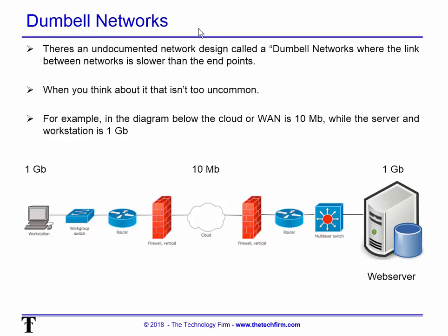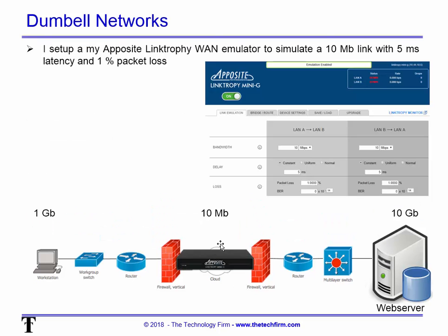Now there's a network design we've been talking about for years — we call it a dumbbell network. The link between the networks is slower than the endpoints: big, small, big, just like a dumbbell. This isn't uncommon at all — a data center, a fast PC, a gigabit at the desk, and then maybe in the middle you only have 100 meg Ethernet, 10 meg, some places 1 meg, 512k. This is a very common design, more common than people think.